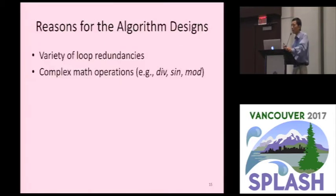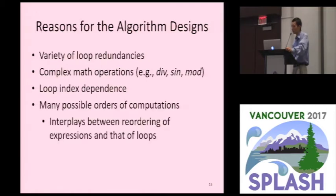Because of these varieties, we need to have different ways to detect them and address them. The second complexity is that the statement in the loop could also use different mathematical operations. We could have some divisions, cosine or sine or mod operation, function calls, and how to handle these. The next one is loop index dependencies. Some loop bounds could be a function of some loop index variables and how to deal with them. Last one is for a given loop, we have the formula, but we could still have many ways. We could reorder the computation across expressions and across loops. There's some very interesting interplays between the reordering between expressions and the loops.